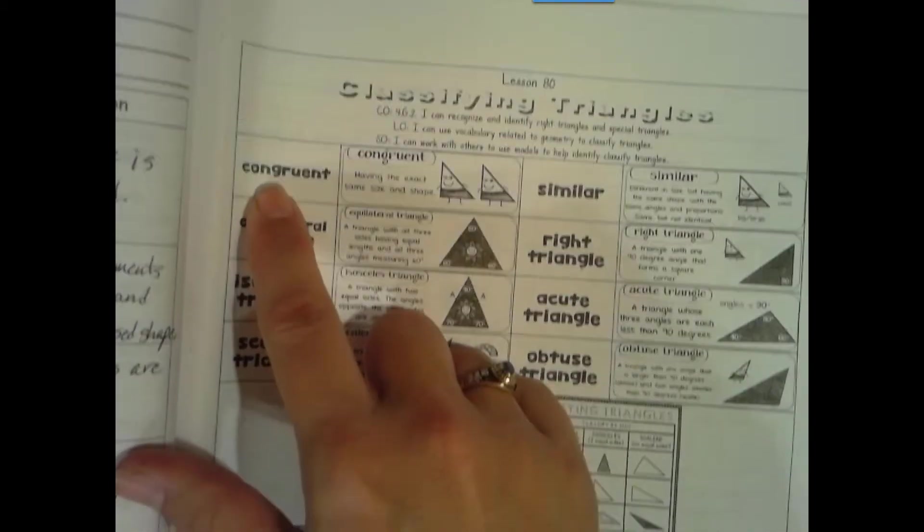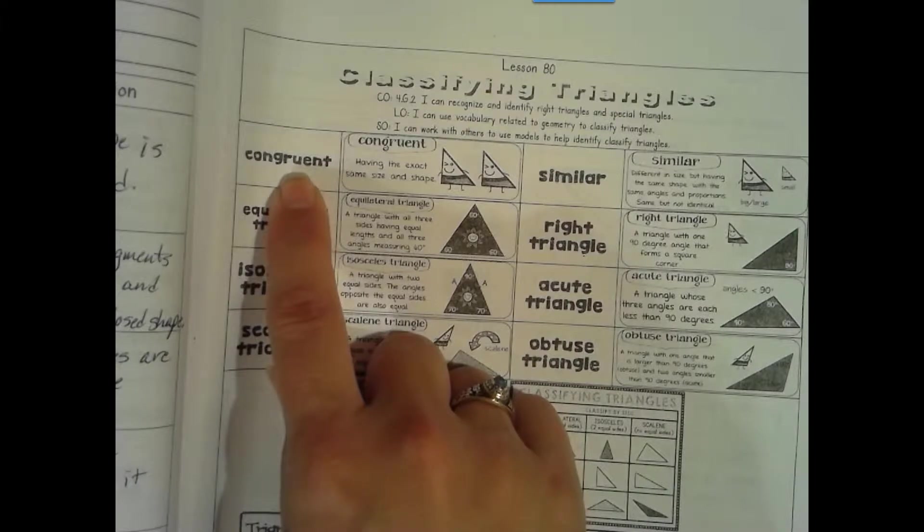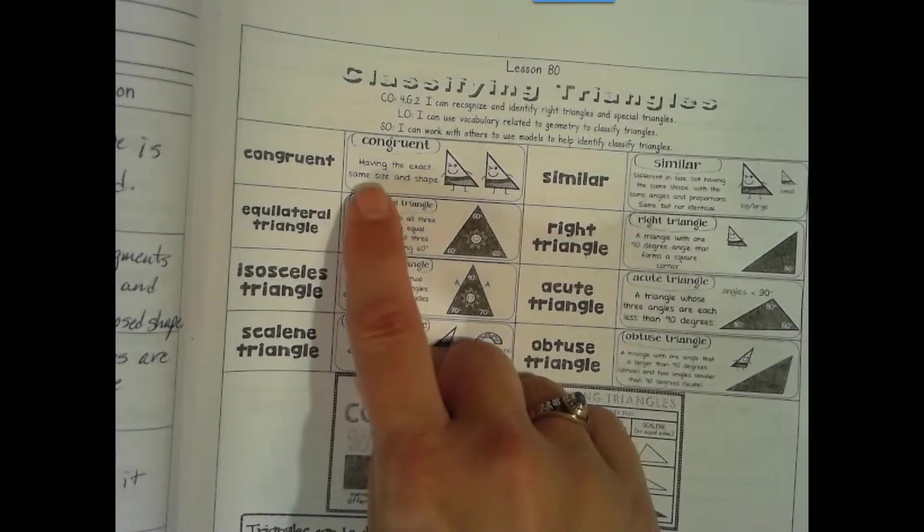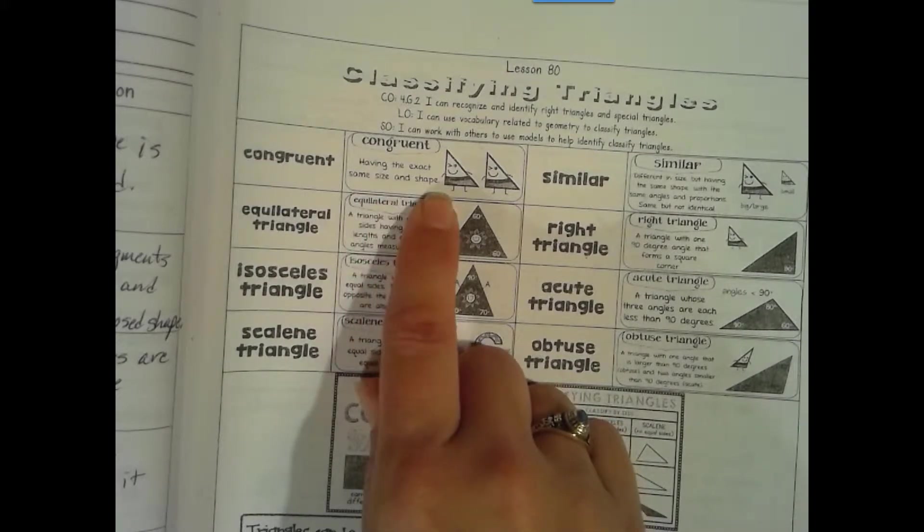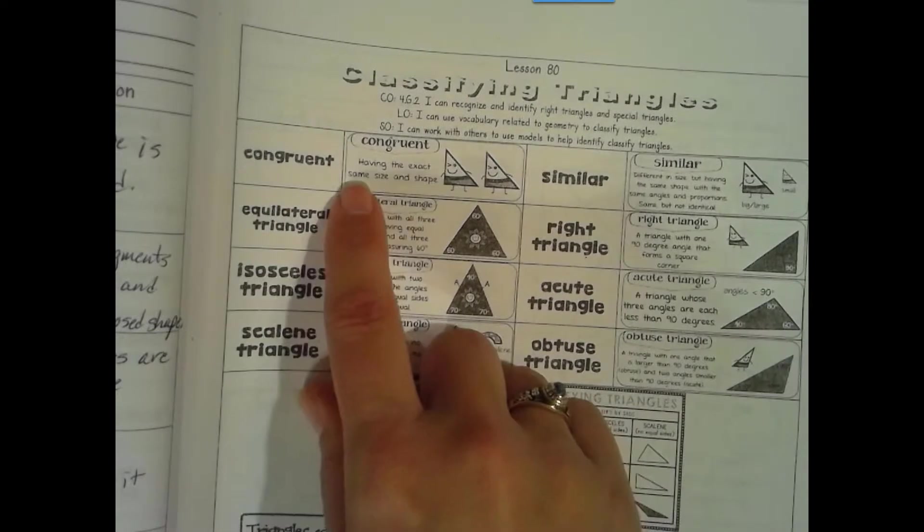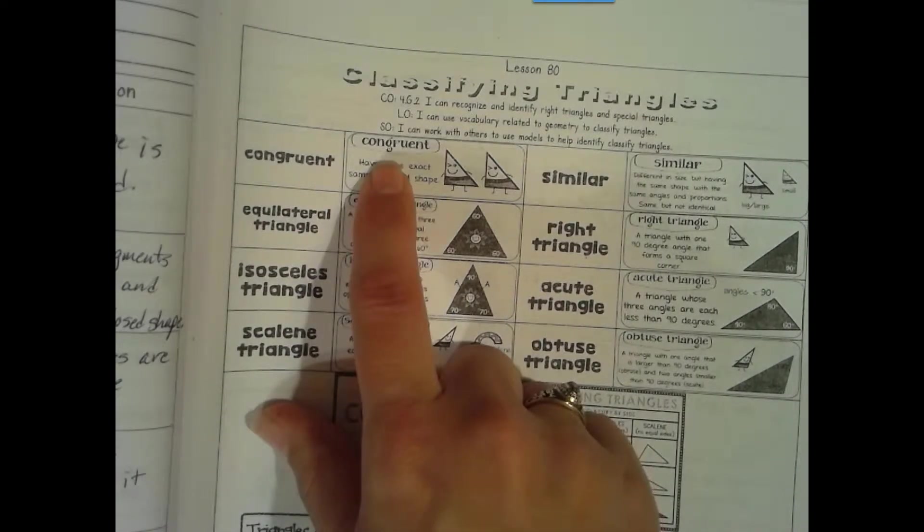So first we have some terms here that we want to become familiar with. Congruent means having the exact same size and shape. So they have equal measure and they're equal shape. Having the exact same size and shape is congruent.